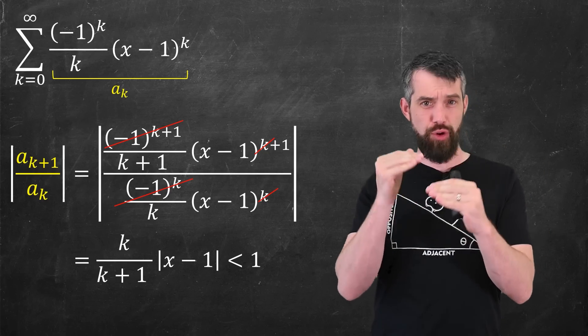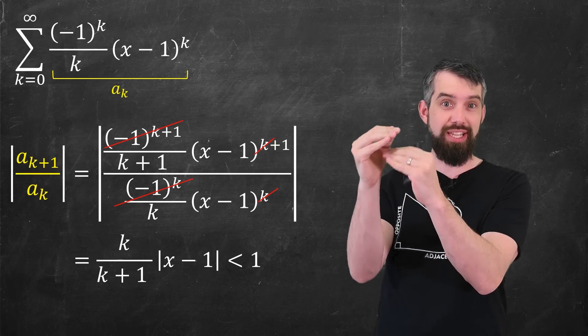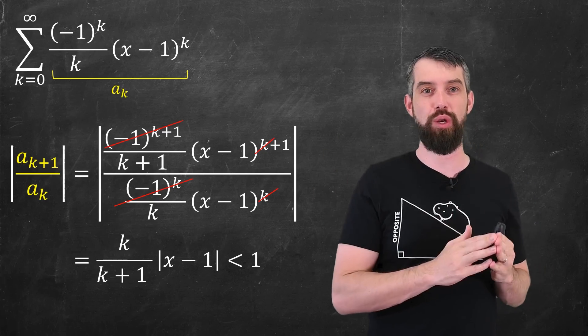And then the idea of the ratio test, where I'm looking at the ratio of those terms, is I want those ratios to get smaller if I'm going to have this thing converging. So I'm going to demand that this is less than 1.